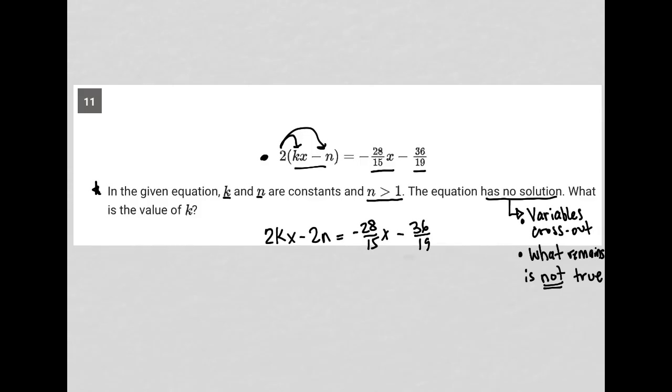In order for it to have no solution, my first and most important part of this is that the variables cross out. So let's think about that. I have an x term here. I have an x term there. I know k is some constant.